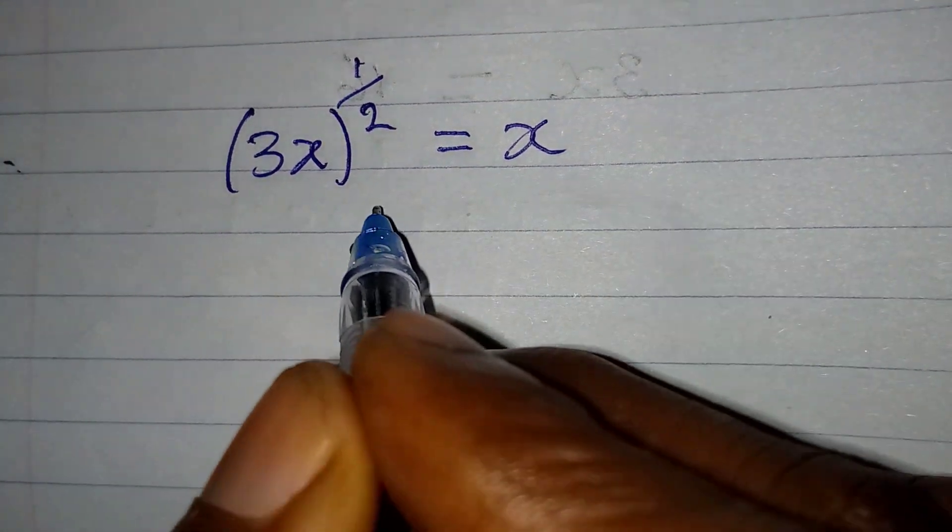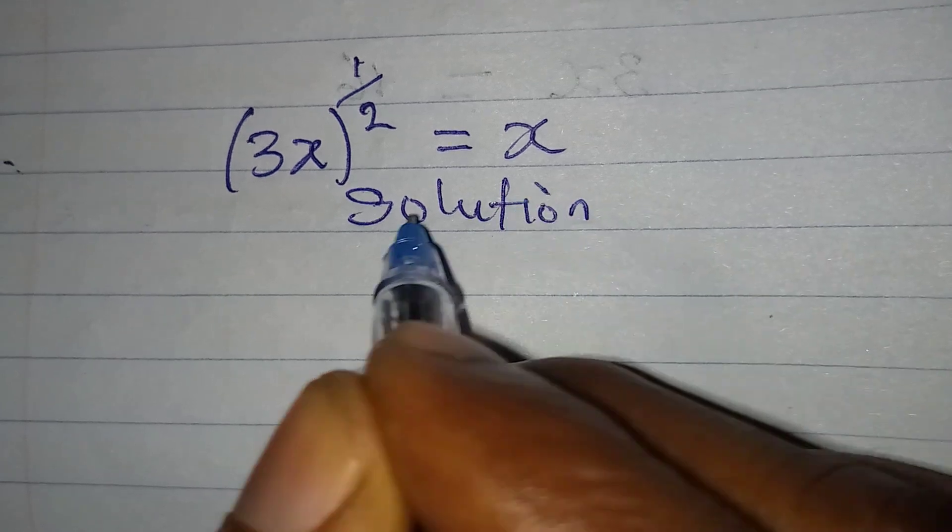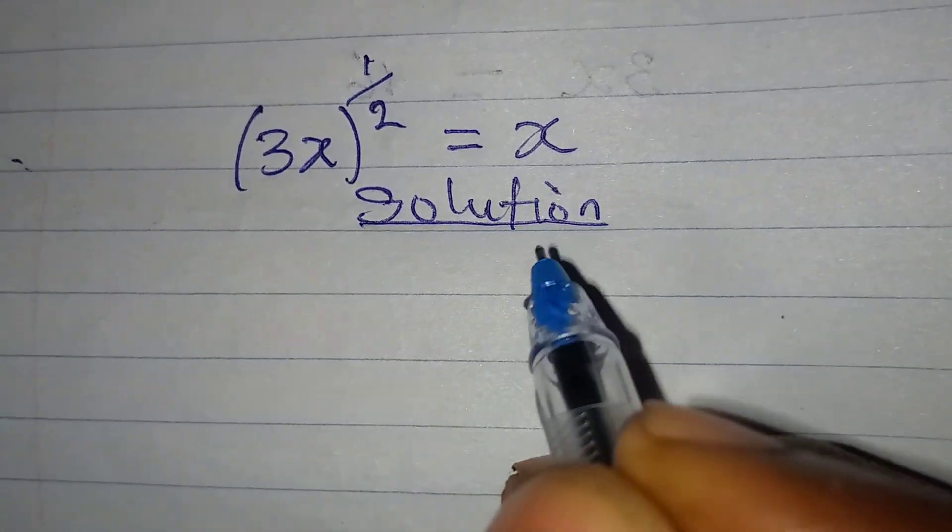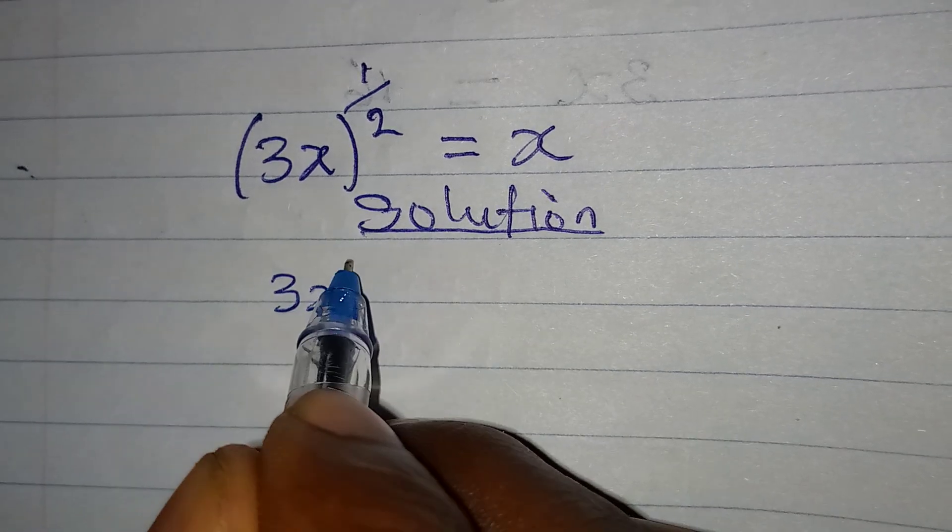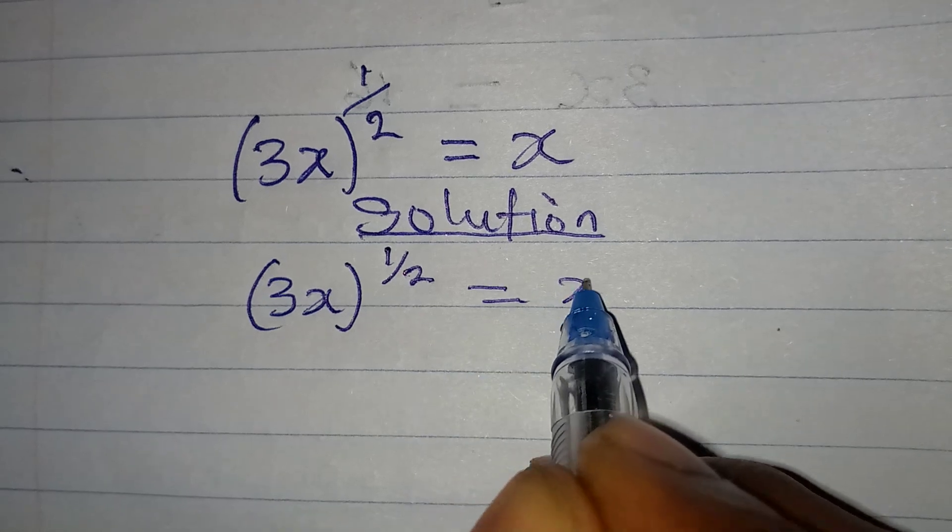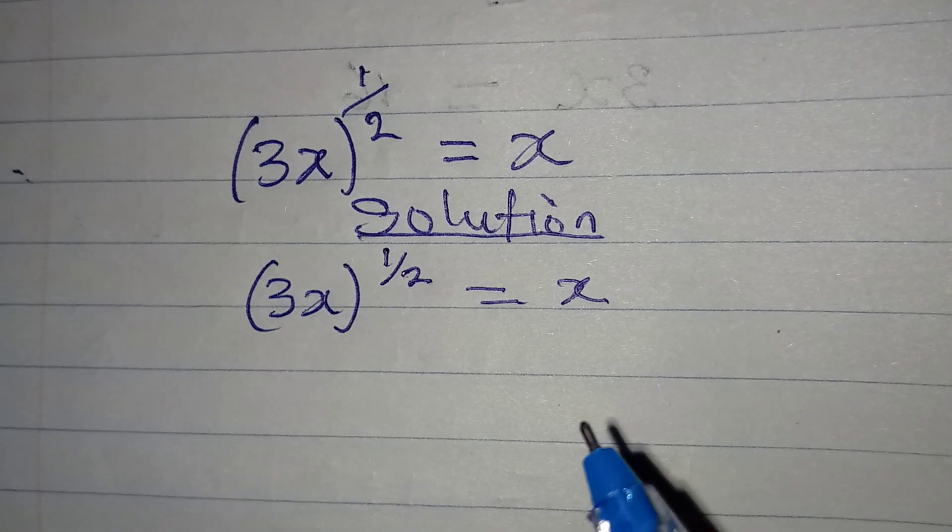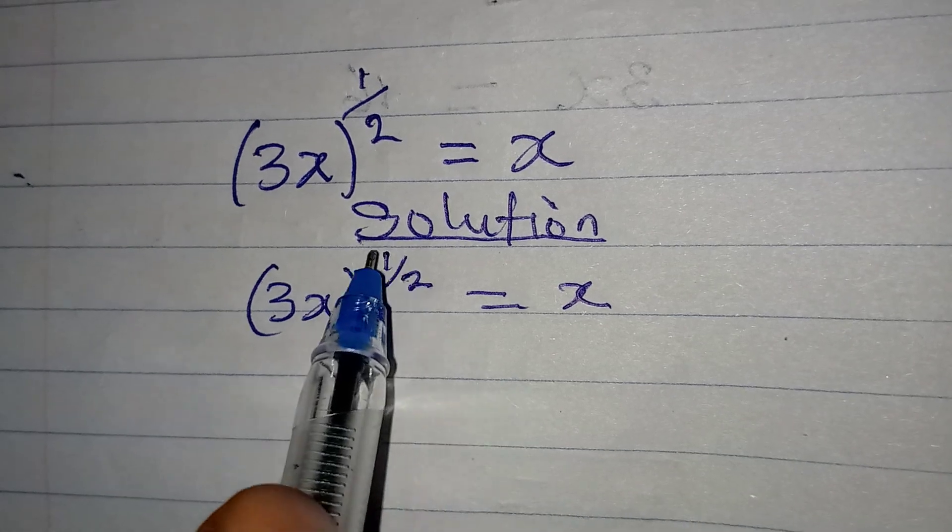Hello everyone, let's provide the solution to this problem and get all the possible solutions. Actually we have (3x)^(1/2) = x. Now without opening this bracket or eliminating this power you can divide both sides by 3, right? Okay, and to eliminate the power, this is what I will do.